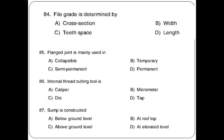File grade is determined by its length. Flange joint is mainly used for temporary connections. Internal thread cutting tool is a tap.